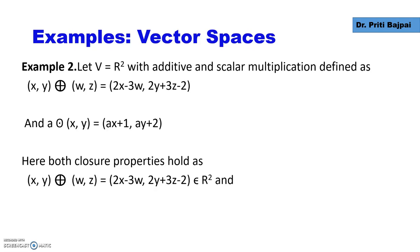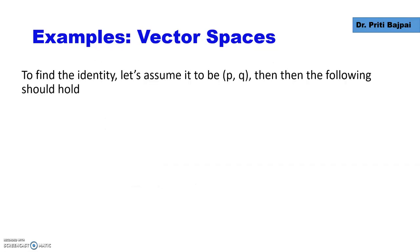Let's check whether both closure properties hold. In this type of addition, we see that again we get a point in the plane and when we multiply by the scalar, again it's a point from the plane. So both the closure properties hold.